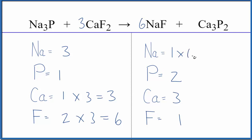So we have 1 sodium times 6, that gives us 6 of those. But the 1 fluorine times 6, that'll give us 6 of those. That balances the fluorines.